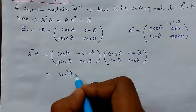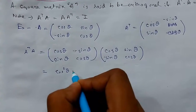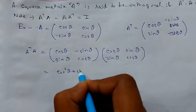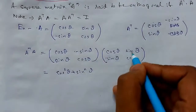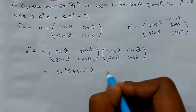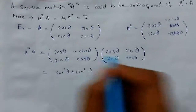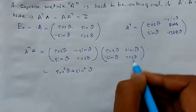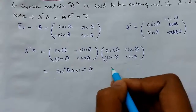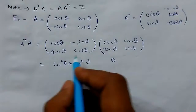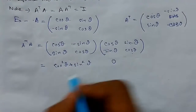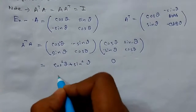Computing the full product, the off-diagonal terms cancel out, giving us the identity matrix. This confirms the rotation matrix is indeed orthogonal.